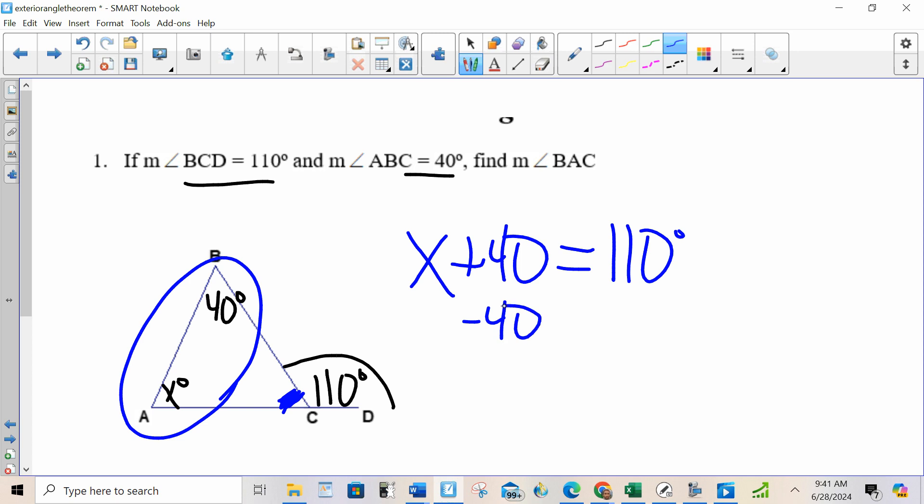From there, I do the algebra if necessary. X is 70. And that should make sense because 70 and 40 add to equal 110. The two interior angles not touching the exterior angle add to equal the exterior angle.